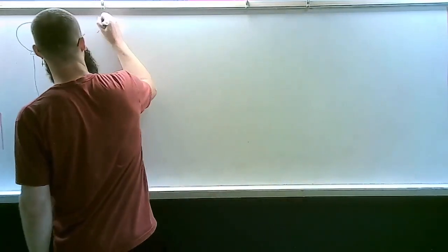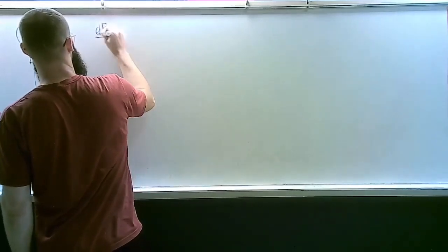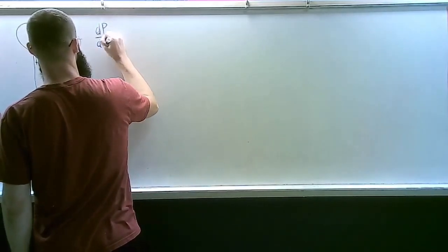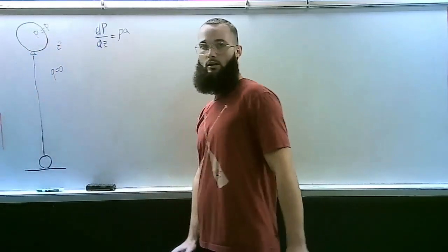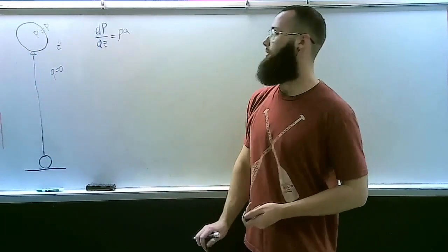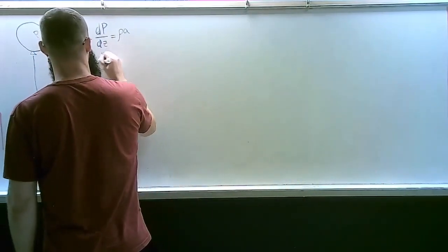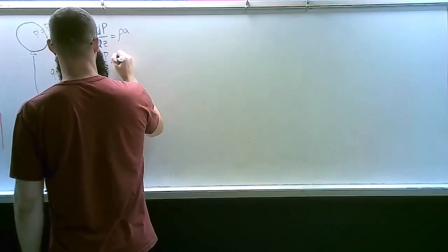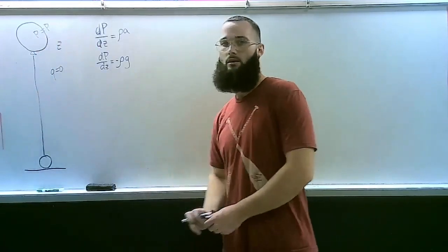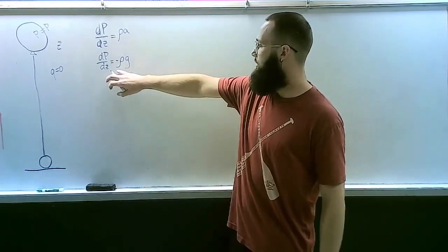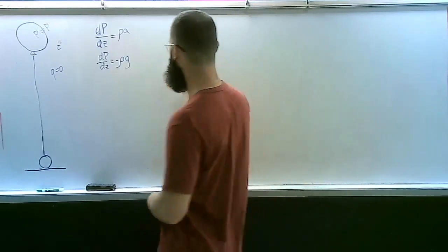We want to start with the basic equation of fluid dynamics, which is dp/dz is equal to ρa. In this instance, we know that a is going to be g, the gravitational constant. So dp/dz is going to be equal to negative ρg.